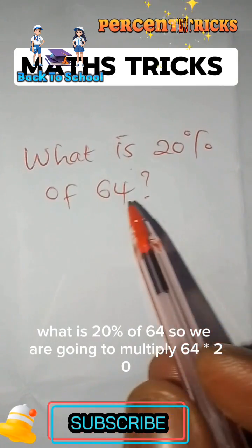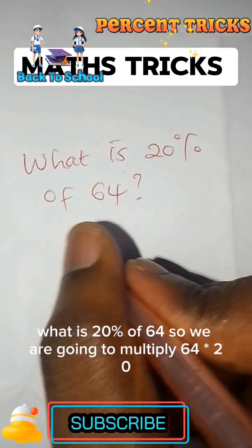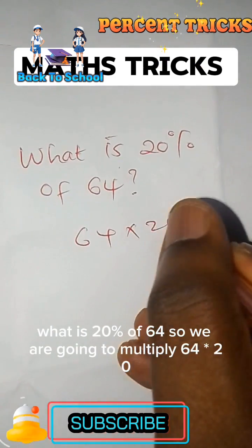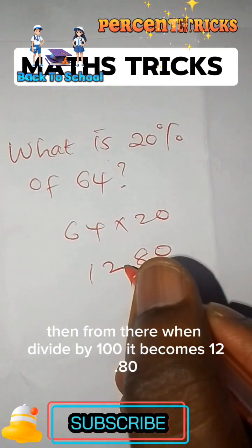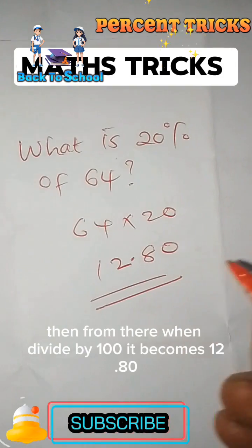What is 20% of 64? So we are going to multiply 64 times 20. So here we shall get 1280. Then from there when we divide by 100 it becomes 12.80.